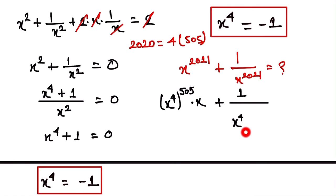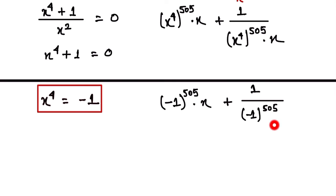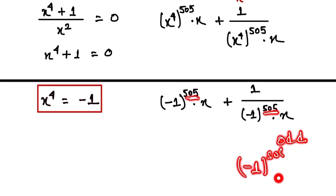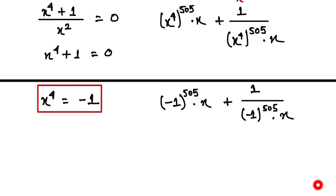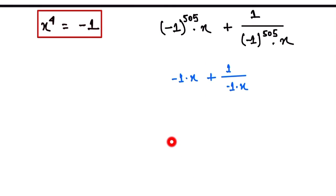Now we substitute x⁴ = -1. So we get (-1)^505 × x + 1 over (-1)^505 × x. Since 505 is an odd number, raising -1 to an odd power gives -1. So (-1)^505 = -1.